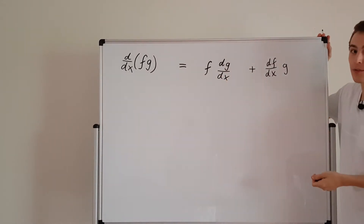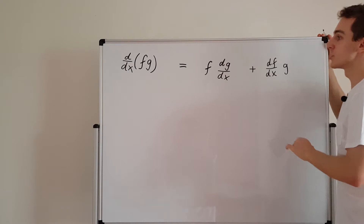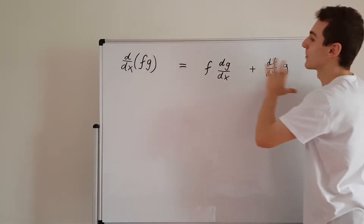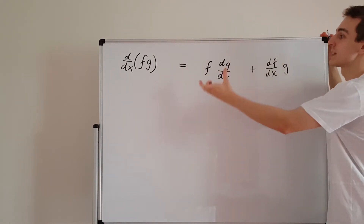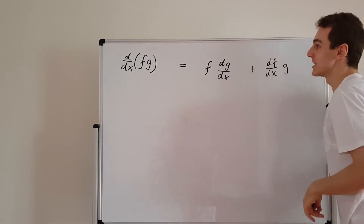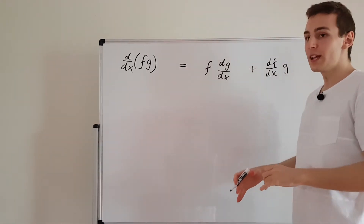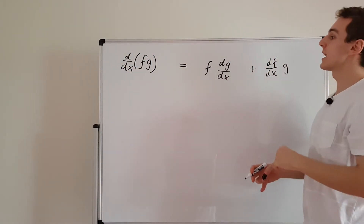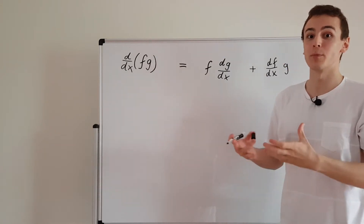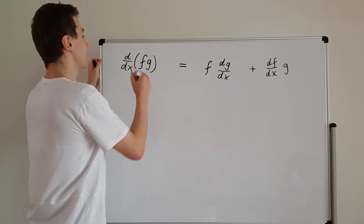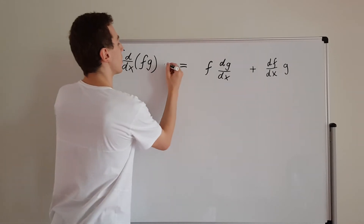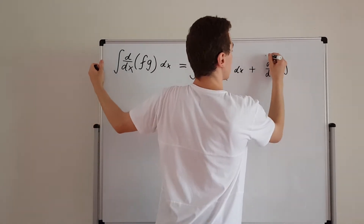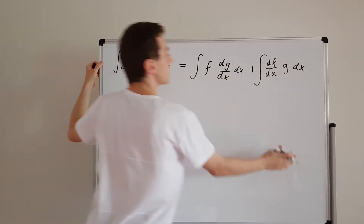This idea of swapping derivatives is going to become very useful in a moment. What I want to do is take this product rule and turn it into something that involves integrals. So if we integrate both sides with respect to x, the left-hand side and the right-hand side give us something closer to integration by parts. We integrate each term on the right-hand side with respect to x and this is what we get.